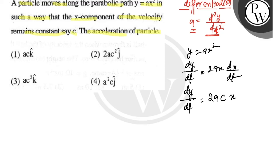One more time differentiation: d²y/dt². The constant remains the same into dx/dt, and dx/dt is also c again, so you get 2ac². Direction is along y in j cap, so the answer is 2ac² j cap. That's option 2. I hope you understood it.